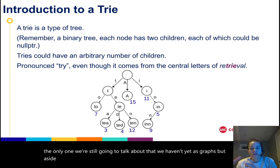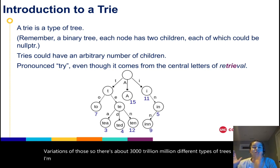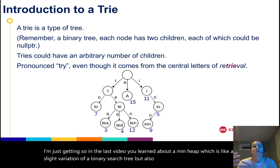There's about three thousand trillion million different types of trees - I'm just kidding. In the last video, you learned about a min heap, which is like a slight variation of a binary search tree but also has this cool feature that you can store it in an array, which makes for some really nice space efficiency.